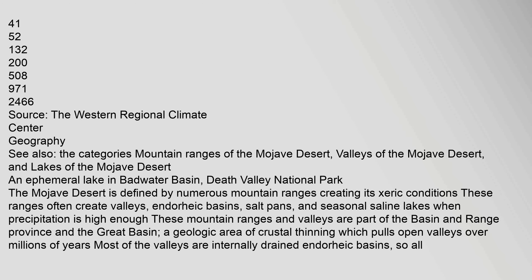See also: the categories Mountain Ranges of the Mojave Desert, Valleys of the Mojave Desert, and Lakes of the Mojave Desert. Ephemeral Lake in Badwater Basin, Death Valley National Park. The Mojave Desert is defined by numerous mountain ranges creating its xeric conditions. These ranges often create valleys, endorheic basins, salt pans, and seasonal saline lakes.